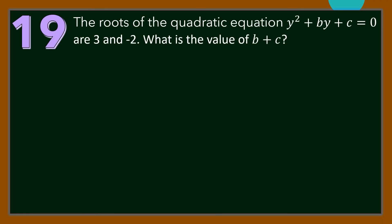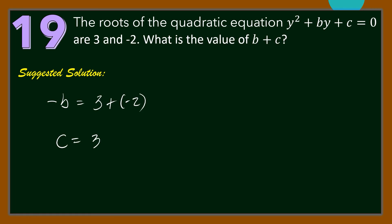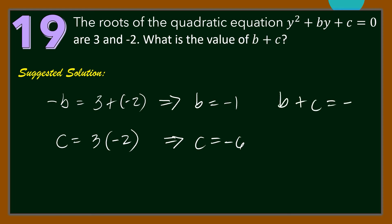Number 19. The roots of the quadratic equation y² + by + c = 0 are 3 and −2. What is the value of b + c? Using Vieta's formulas: −b = 3 + (−2) = 1, so b = −1. And c = 3 × (−2) = −6. Therefore, b + c equals −7.